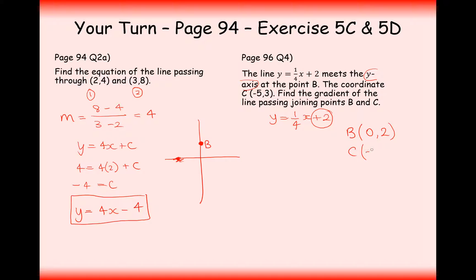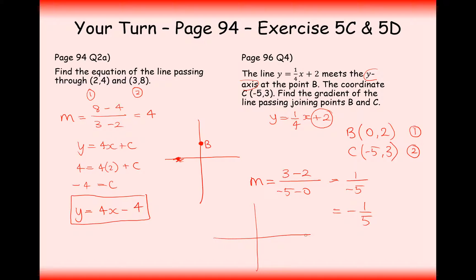Point C has the coordinate (−5, 3). To find the gradient of the line through B and C, I'll call C coordinate 1 and B coordinate 2. It doesn't matter which way round — swapping them just changes the sign on both numerator and denominator. So m equals 3 minus 2 over minus 5 minus 0, which is 1 over minus 5, simplified to minus 1/5. This is a very flat, gently downward-sloping graph.